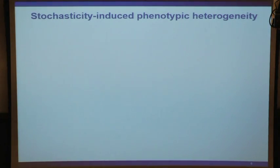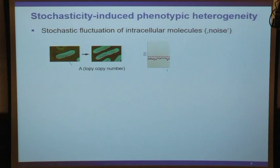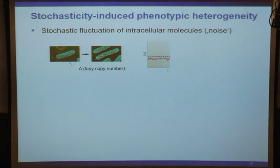There is something like stochasticity-induced phenotypic heterogeneity. When we started this work, it was less common, but nowadays it's very well accepted. There are two things we need for that: stochastic fluctuations of intracellular molecules - something we call molecular noise - that comes about with proteins or biomolecules that are very low in copy number.